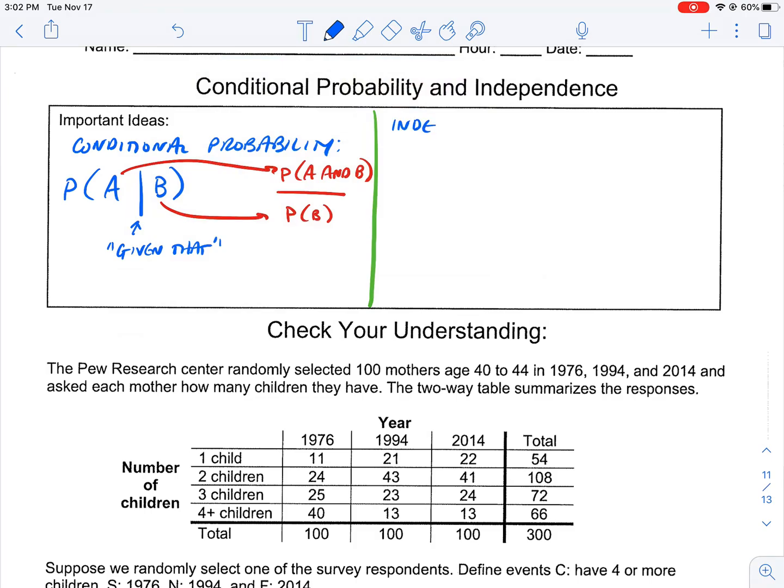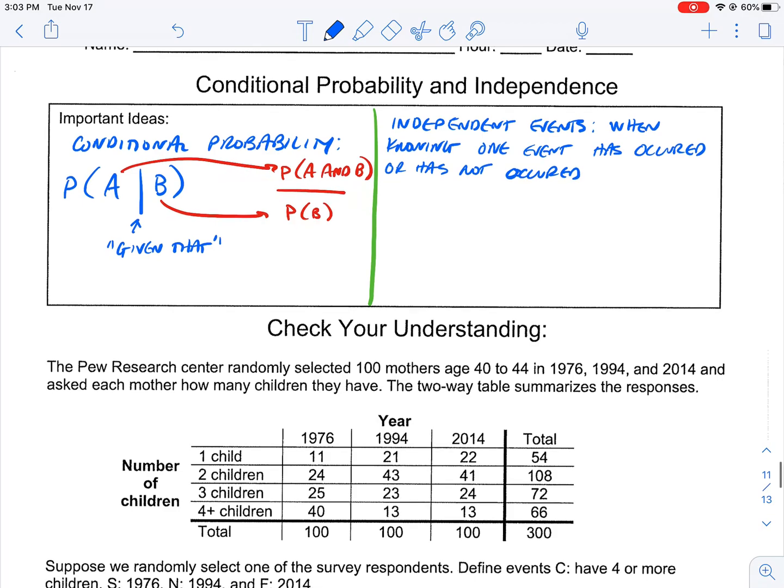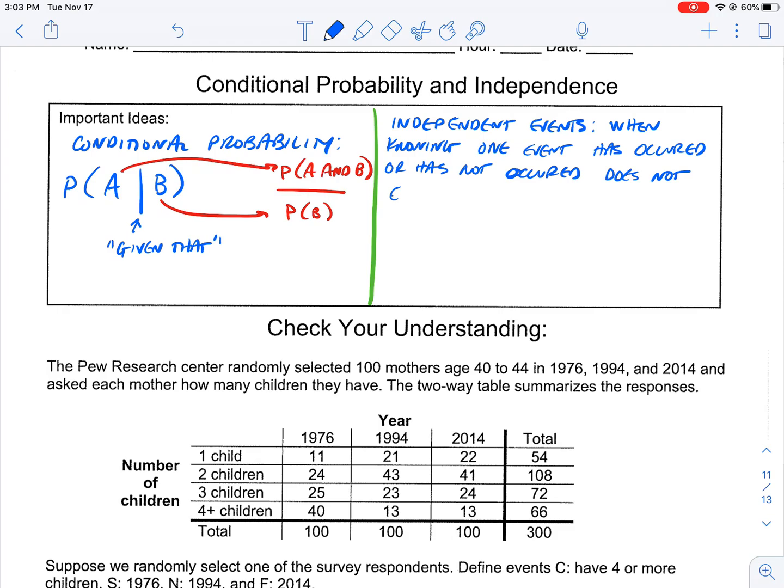We'll look at that a little bit more down below when we start to work on this particular problem. This is where we start to talk about independent events, or independence. Independence in probability is when knowing one event has occurred or has not occurred does not affect the probability of the second event.